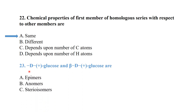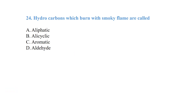Alpha-D-glucose and beta-D-glucose are anomers of each other. Hydrocarbons that burn with a smoky flame are called aromatic hydrocarbons.